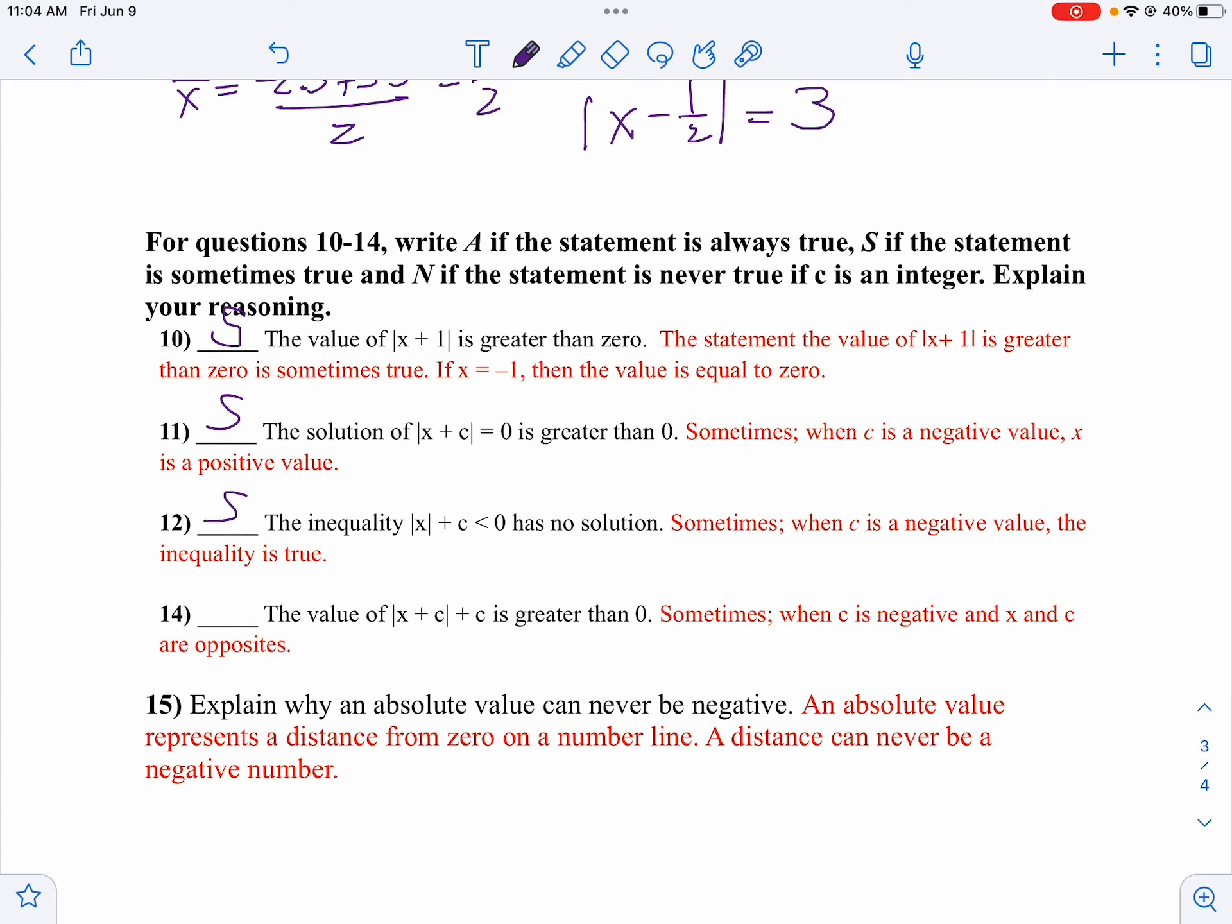Now, the last one seems like it should be something other than sometimes, because I know absolute value is positive. If I add something onto there, but what happens if x and c are opposite to each other? Then it would be zero, and then I'd have a problem, because it wouldn't be greater than zero. Kind of a trick question we pulled on you here, didn't I? Because I gave you four questions, they're all sometimes.